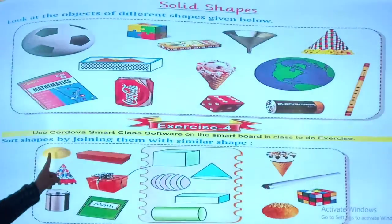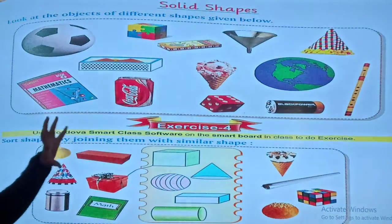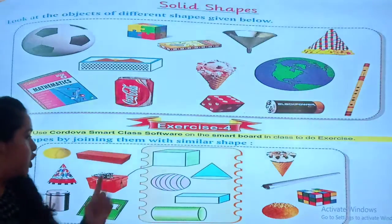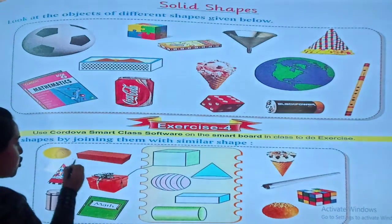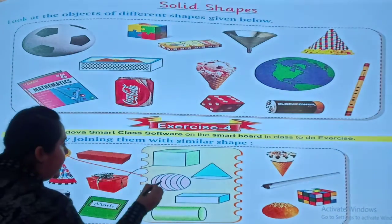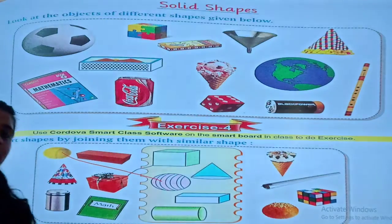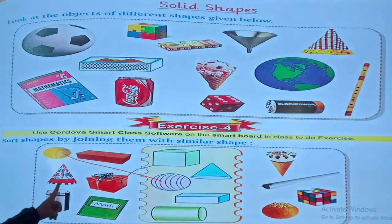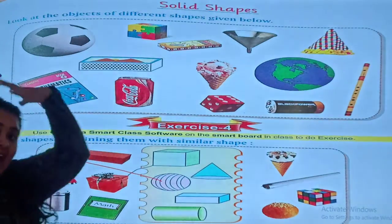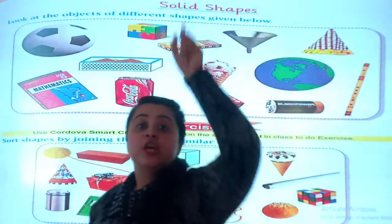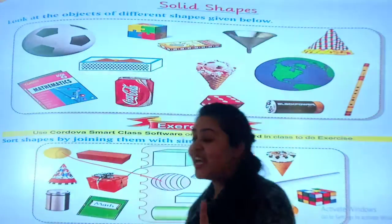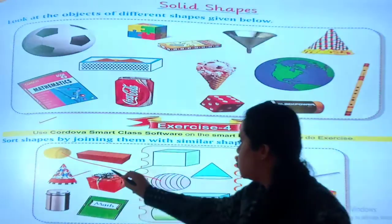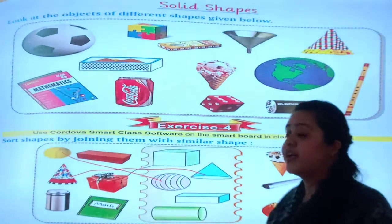First is the ball. The ball is in which shape? Circular. So I will join this ball with the circular shape here. The second shape is a hat. What shape is the hat? So I will join this hat with its matching shape here.